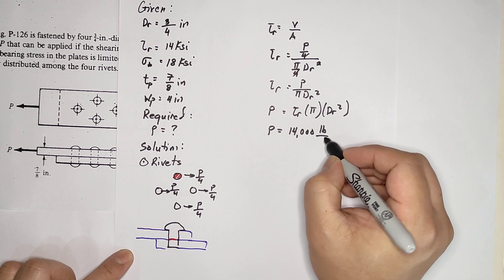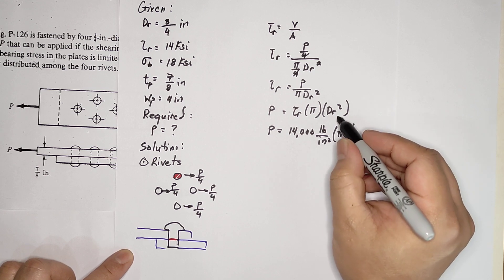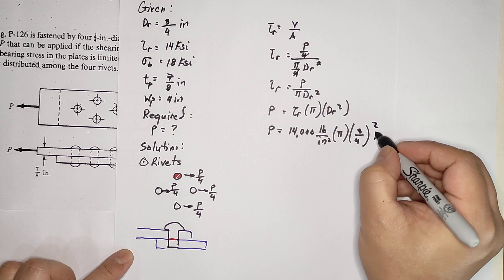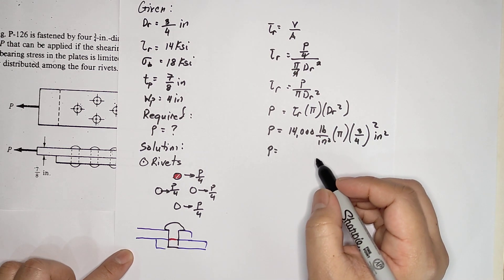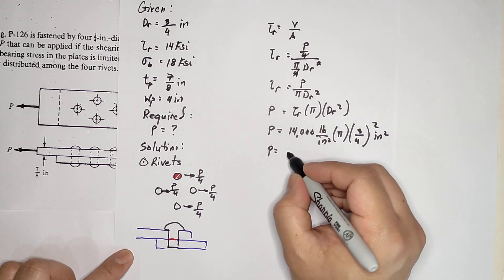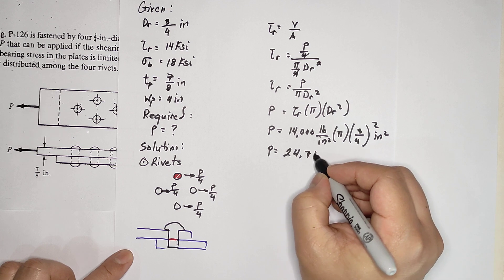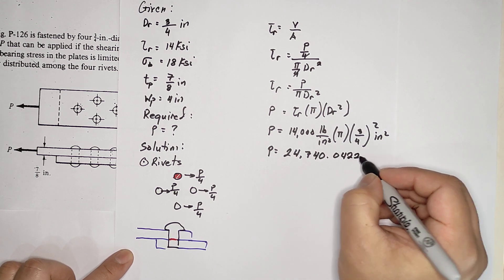Substituting: you have 14 KSI, that's 14,000 pounds per inch squared, times π, then dr = 3/4 squared. That's inch squared, so you're left with pounds. Computing the value you get 24,740.042 pounds.